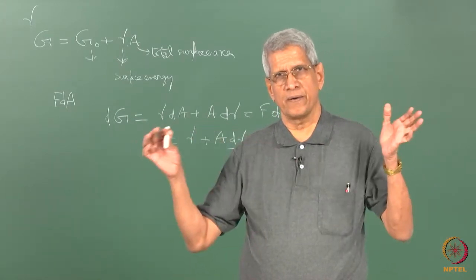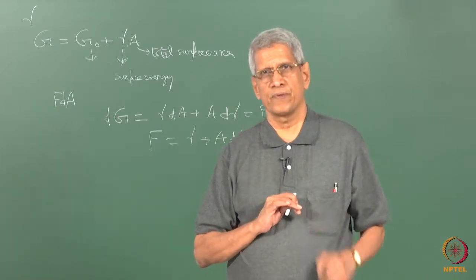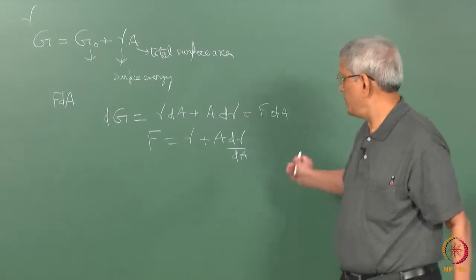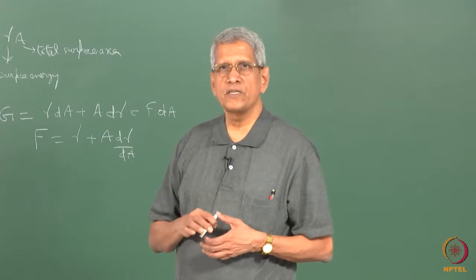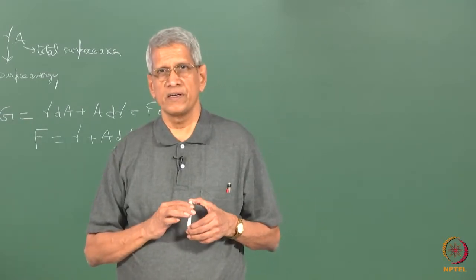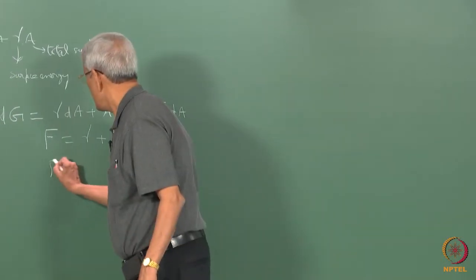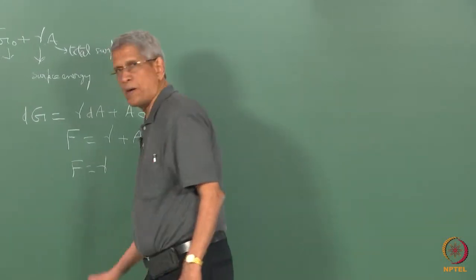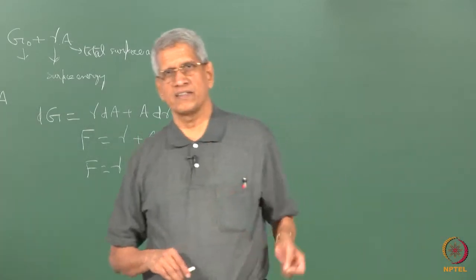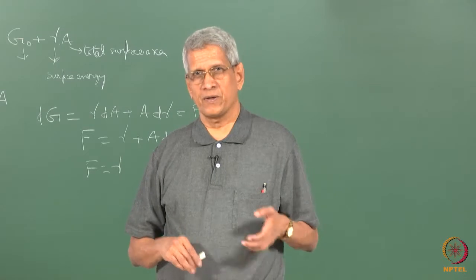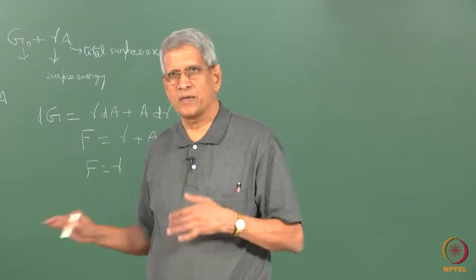If we consider a liquid, the surface energy is independent of area, so the term A × d(gamma)/dA turns out to be zero. Therefore F = gamma, and in this case gamma can be considered as surface tension. Surface tension and surface energy are the same for liquids.